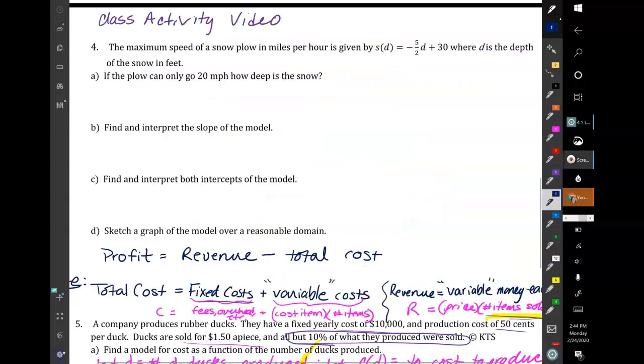Okay, so this one, the maximum speed of a snowplow in miles per hour is given by S(D) equals negative 5 halves D plus 30, where D is the depth of the snow in feet. So all our variables and stuff are declared for us.